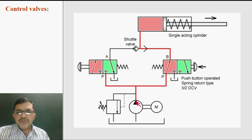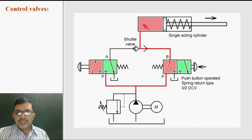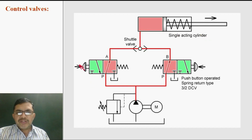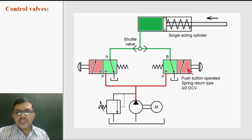If valve B is pressed, then from the pump, oil flows to B and then to the shuttle valve and then to the cylinder — the cylinder will extend. If both valves A and B are pressed together, then also fluid will flow to the cylinder and the cylinder will extend. If none of these two valves are pressed, then the cylinder will retract.